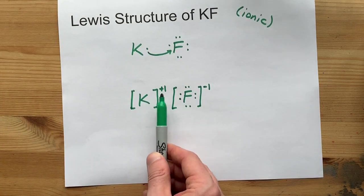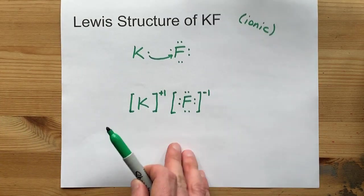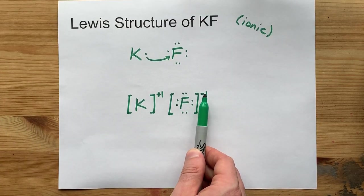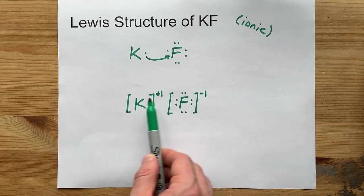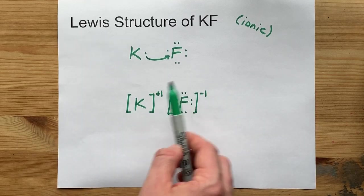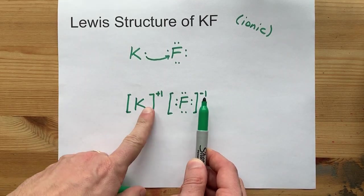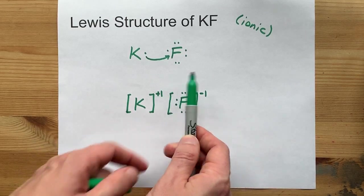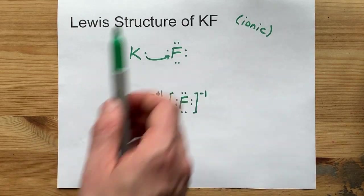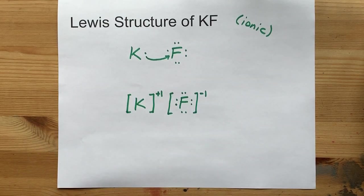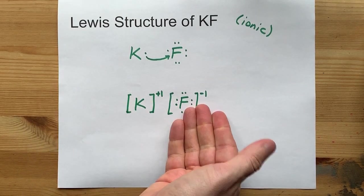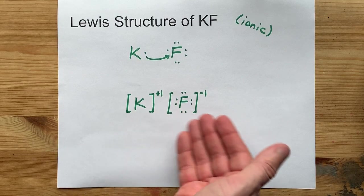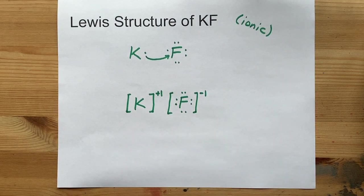Potassium, plus 1; fluorine, with a minus 1. Combined to make two ions with opposite charges, they attract and form an ionic bond. This is your complete Lewis structure. Best of luck.